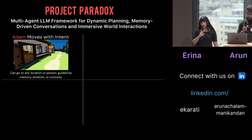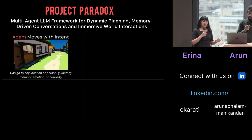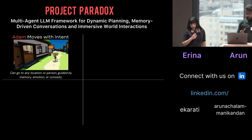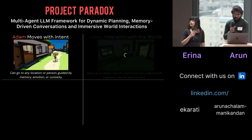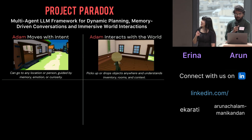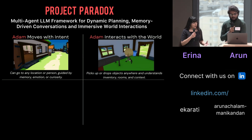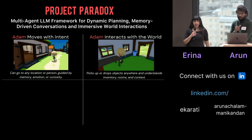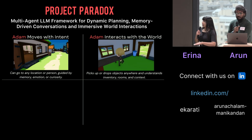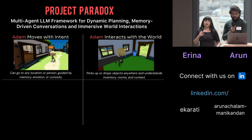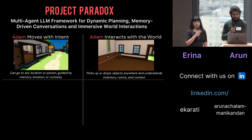Adam can move with intent. He can go to any location or person, and he does this autonomously. Adam can interact with the world — he can pick up objects, he can drop objects, and he's aware of the context of every location he's in.